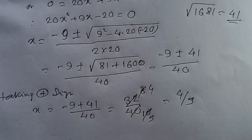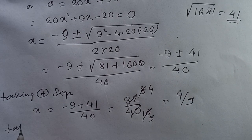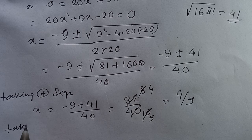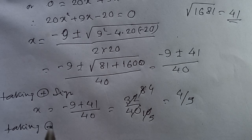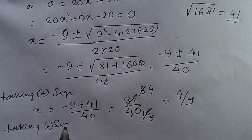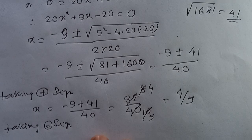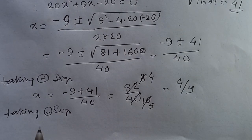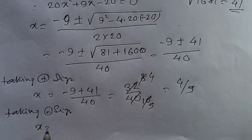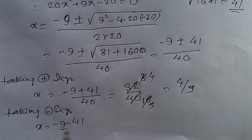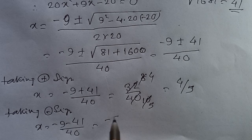Taking the minus sign, x equals minus 9 minus 41 over 40, which equals minus 50 by 40, giving x equals minus 5 by 4. Since the fraction must be a positive proper fraction, we reject the negative value. Therefore, the proper fraction is 4/5.